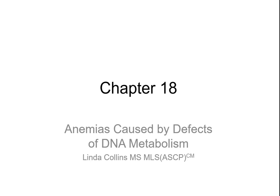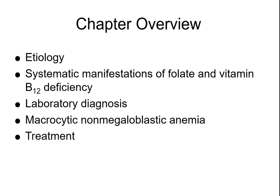Chapter 18 is about anemias of defective DNA metabolism. Many of these are going to be megaloblastic anemias because what happens is the cytoplasm gets bigger and bigger, but the nucleus isn't replicating the way that it should. So for the most part we end up with megaloblastic anemias — 'mega' means large, 'blast' refers to those bone marrow precursors.